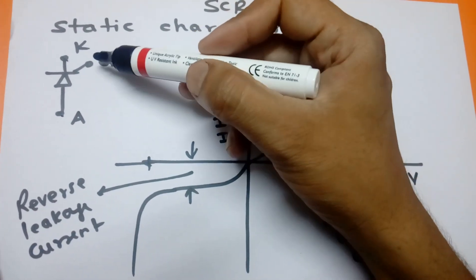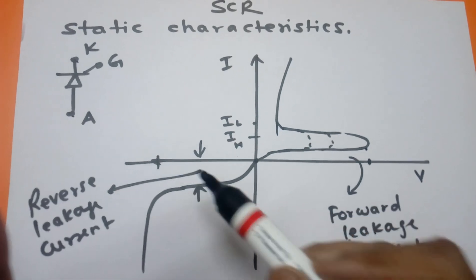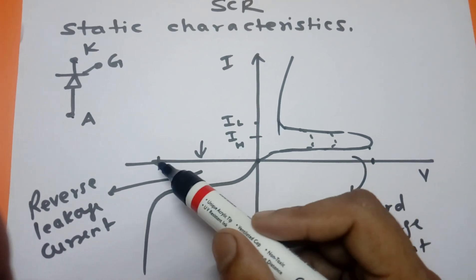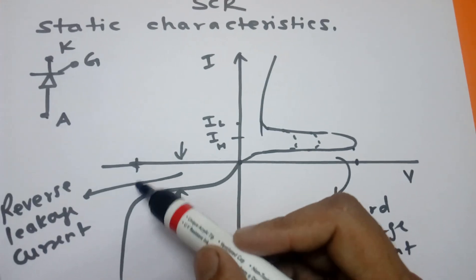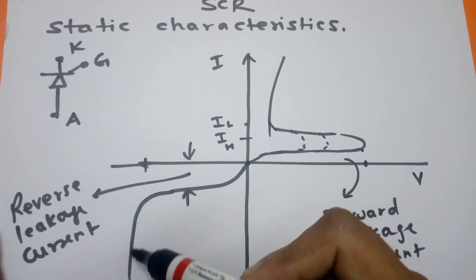Similarly, in reverse bias condition when the anode is negative and cathode is positive, reverse leakage current flows in the negative side. This current is very small. If we increase the reverse bias voltage, then Zener effect will occur and avalanche breakdown will take place, so suddenly current will flow through the SCR material.